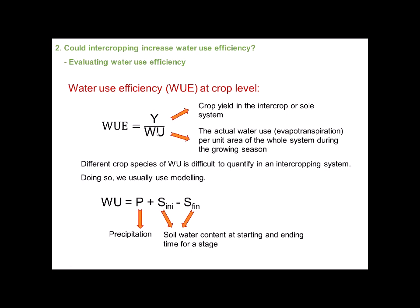Here, WU means water uptake. We should notice that in an intercropping system, quantifying water uptake of different crop species is very difficult. To do so, we usually use crop modeling. In semi-arid conditions, surface runoff did not occur because most experimental fields were quite flat, and each plot was enclosed by a 15 cm high ridge.